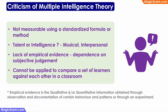Let us look at some of the reasons why the multiple intelligence theory has been criticized. With so many different types of intelligences, they are not all measurable using a standardized formula or method — there is no single formula for measuring all these different types. For some intelligences such as musical or interpersonal, there is a debate about whether they are actually intelligence or just talent or skill that can be learned. There is also a lack of empirical evidence for some types — for example, how do you prove that somebody has naturalistic or intrapersonal intelligence? This is very subjective. And if there are so many different types, how do you compare a set of learners in a classroom on the same scale? This theory does not allow you to do that.